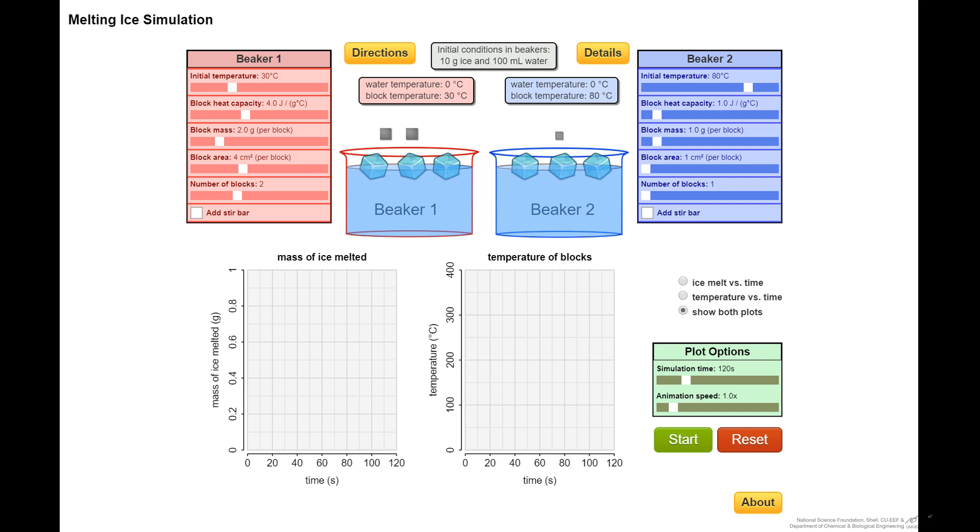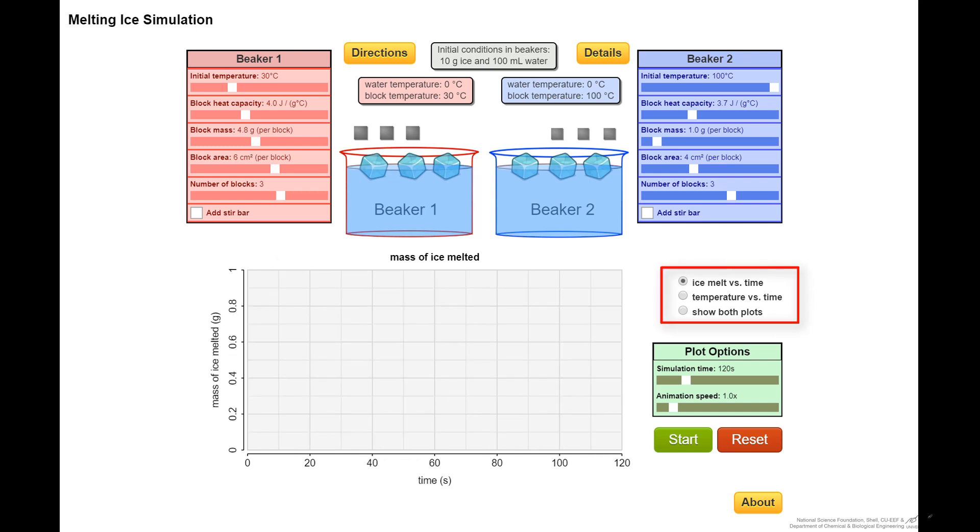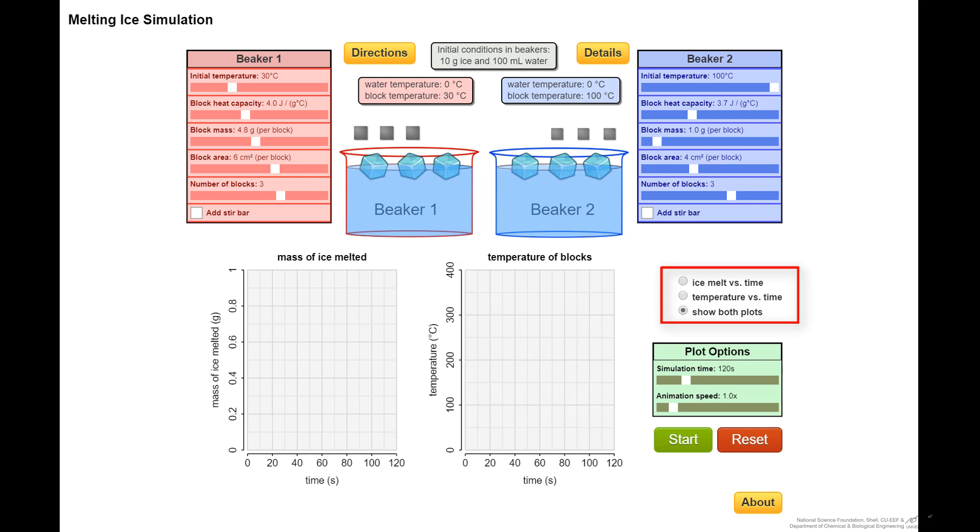So here's the interactive simulation. We can, for example, change the mass of blocks, also the area of the blocks, and the number. And let's make the blocks on the right much warmer, with significant heat capacity. And you notice we have the option of plotting temperature versus time, amount of ice melting, or showing both plots on smaller scales.